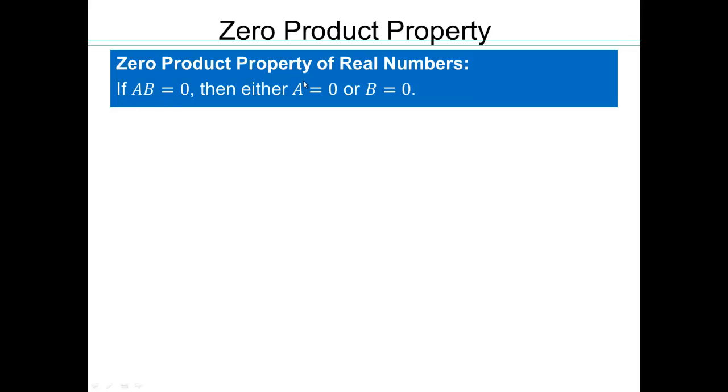If a product is zero, then either A is zero or B is zero, it's guaranteed. You cannot have a product zero otherwise. So for example, if I wrote 2 times x is zero, since 2 is not zero, then x has to be zero. That's the only way 2 times x is going to be zero.